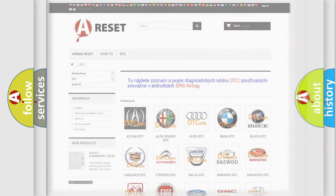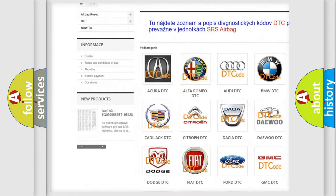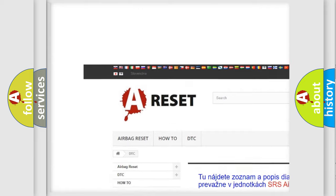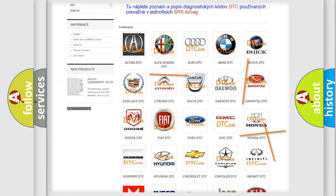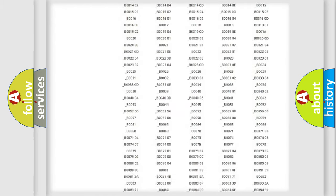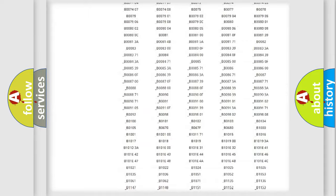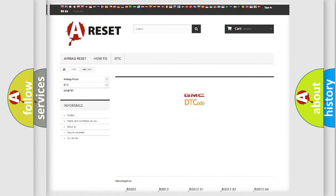Our website airbagreset.sk produces useful videos for you. You do not have to go through the OBD-II protocol anymore to know how to troubleshoot any car breakdown. You will find all the diagnostic codes that can be diagnosed in GMC vehicles.